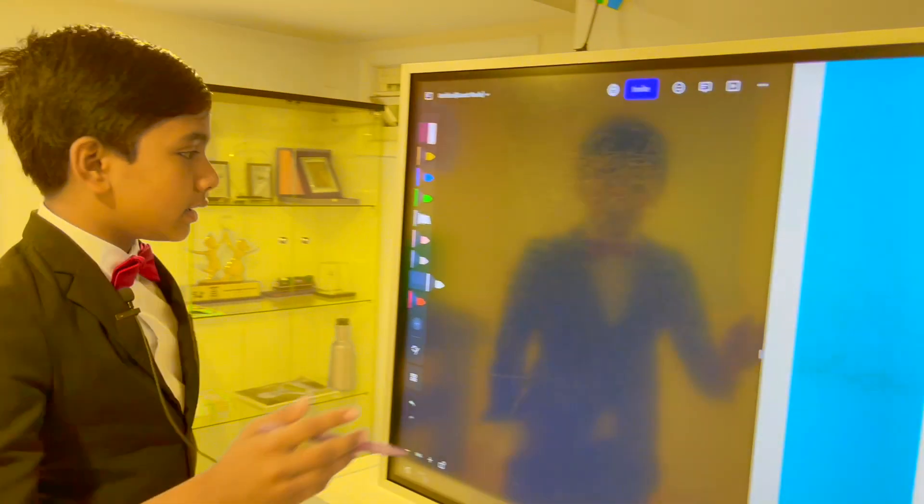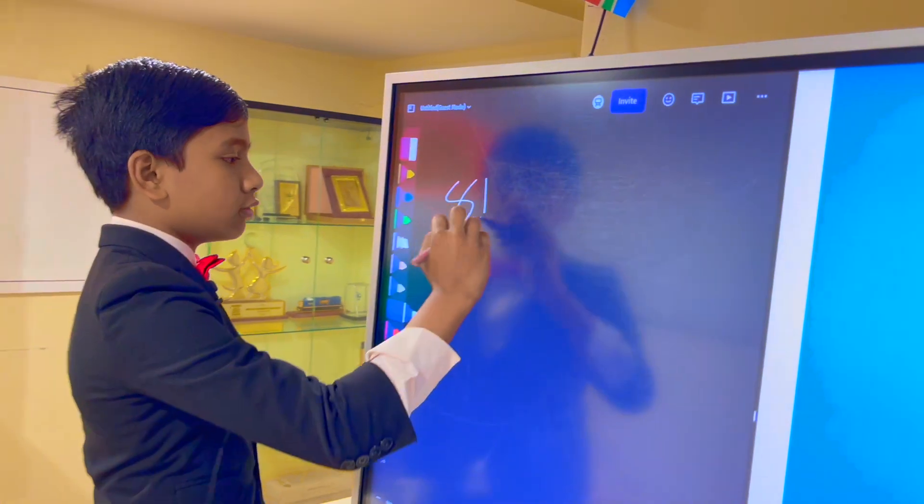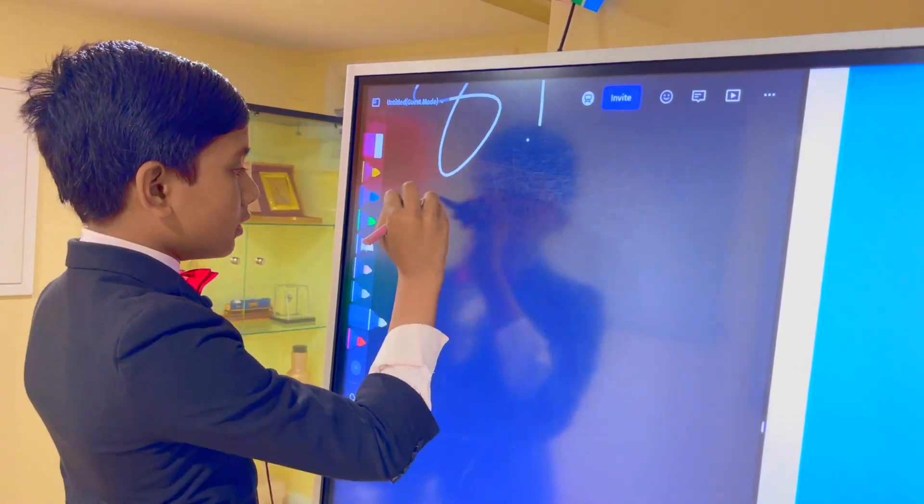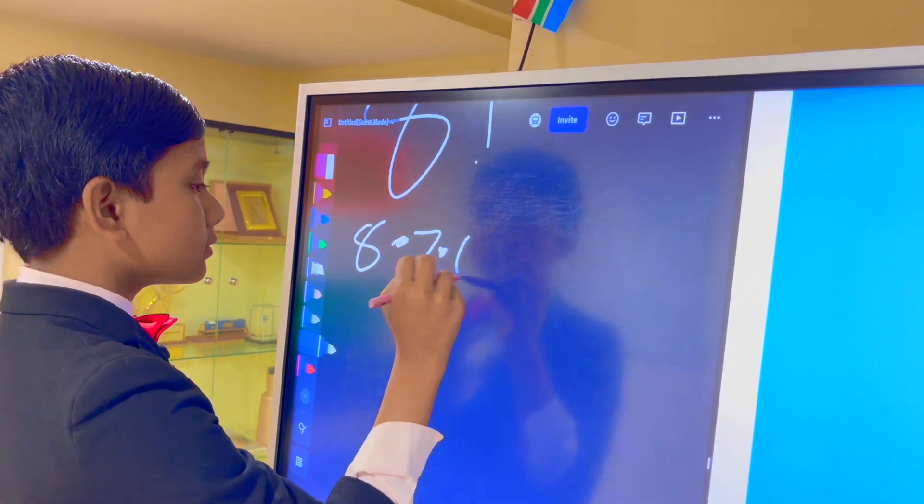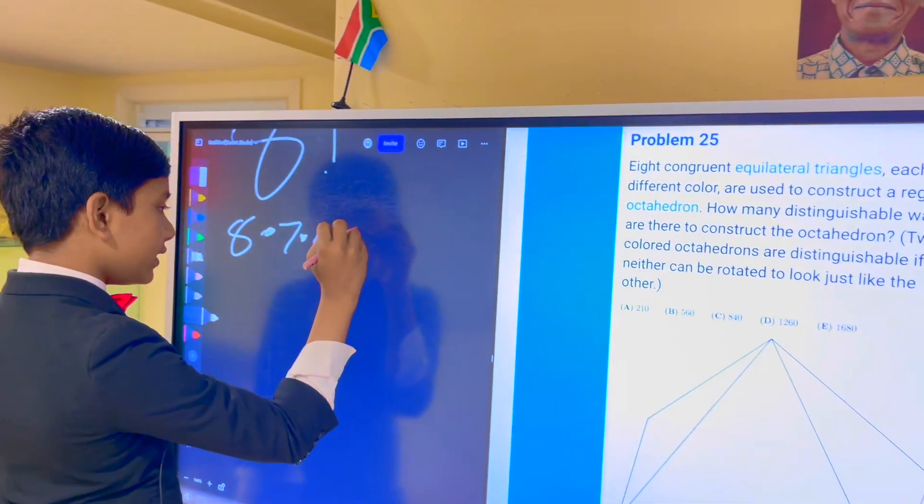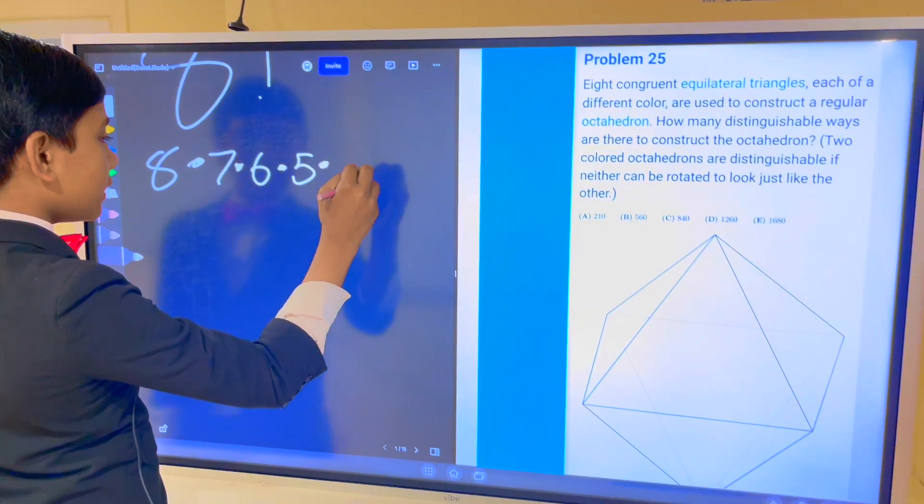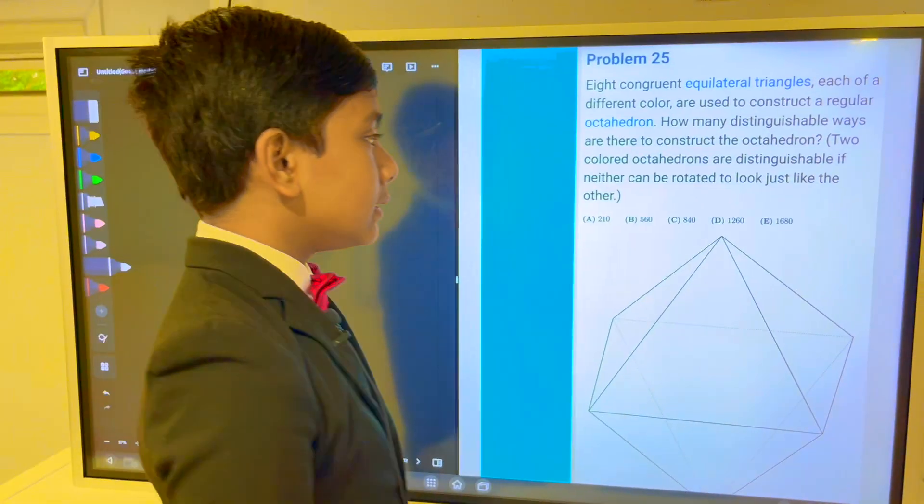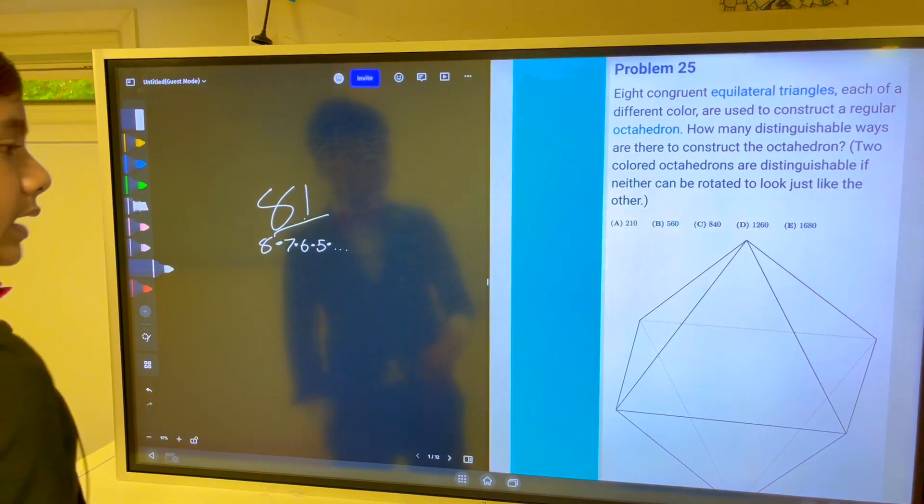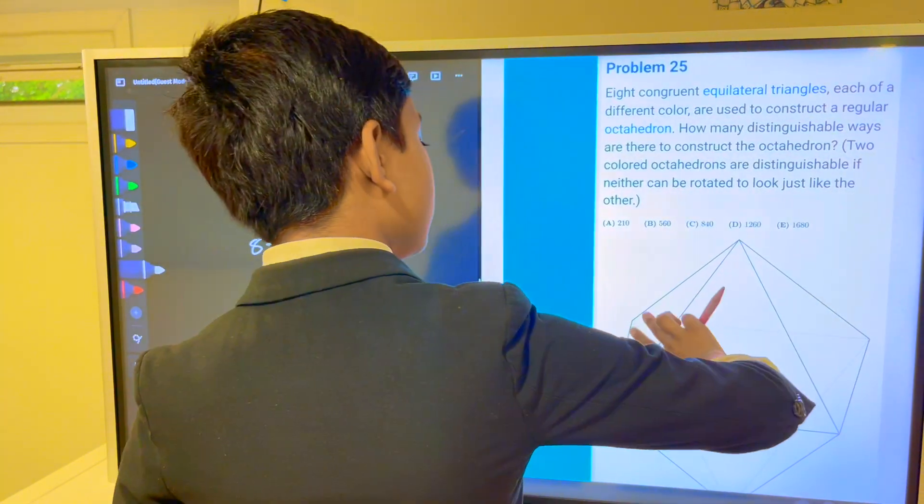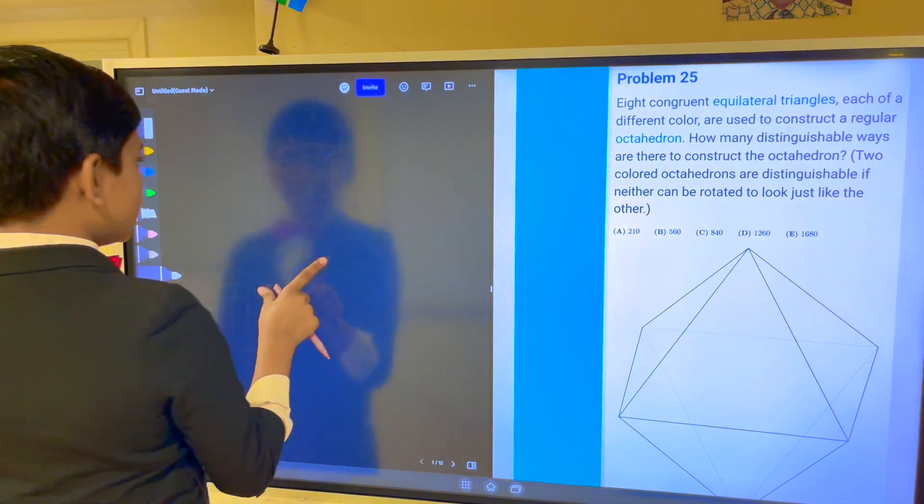There are obviously eight factorial ways to color it. There are eight ways to color the first face, seven to color the second, six ways to color the third face, five ways to cover the fourth, and so on. Now, we're going to divide that by the amount of rotations we can make such that the octahedron looks the same.